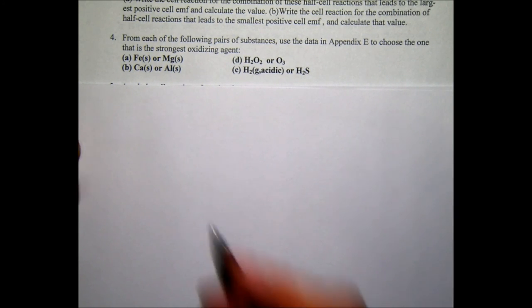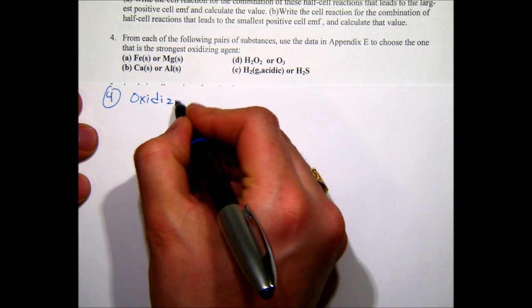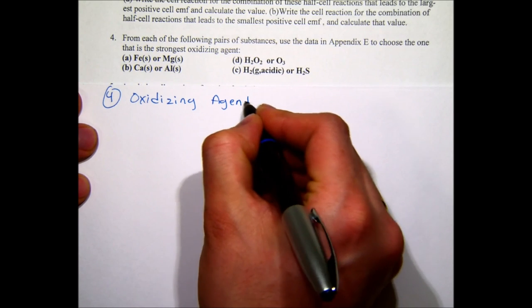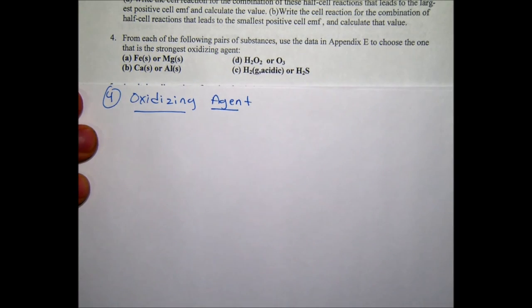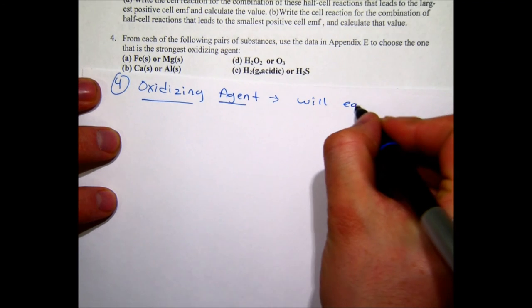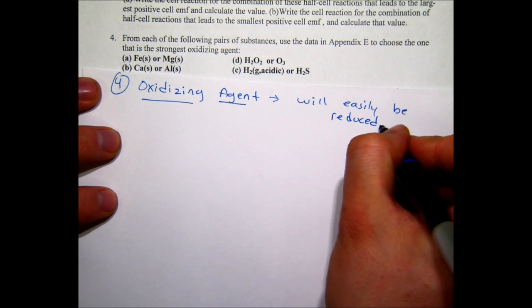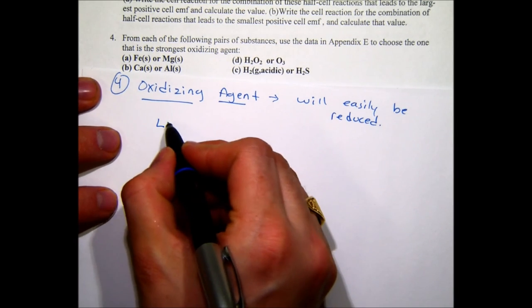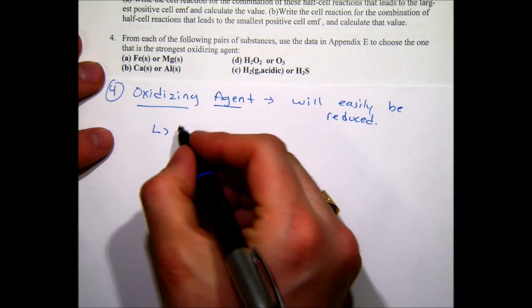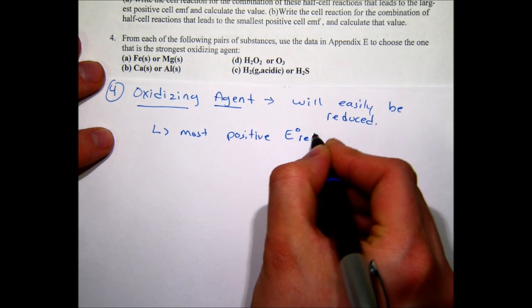Question four asks us to choose the strongest oxidizing agent from each pair. An oxidizing agent is something that is easily reduced — it will readily accept electrons. So we want the species with the most positive standard reduction potential from each pair. We look up values in Appendix E for iron, magnesium, calcium, aluminum, H₂, H₂S, H₂O₂, and O₃.